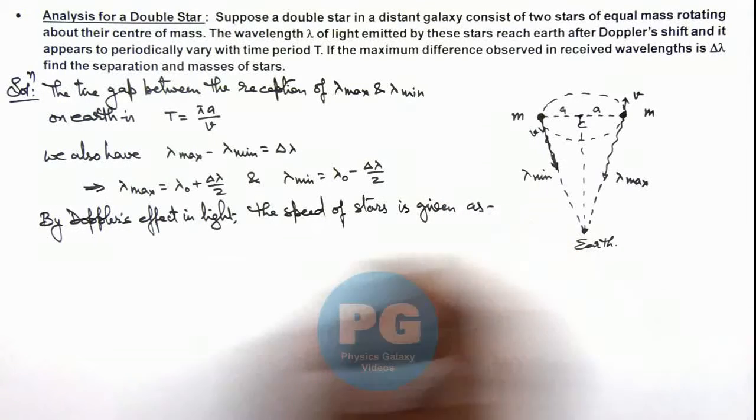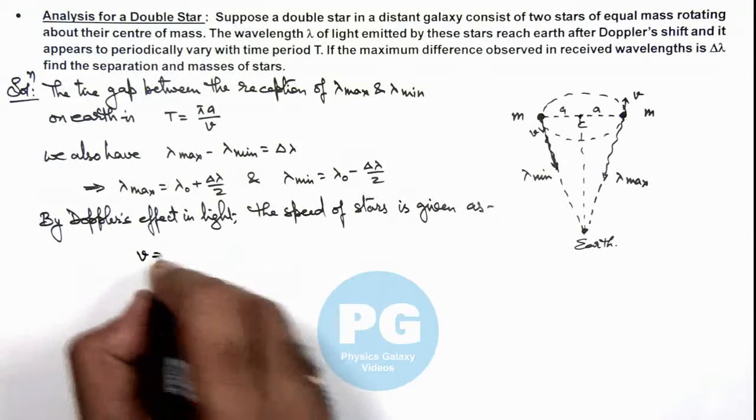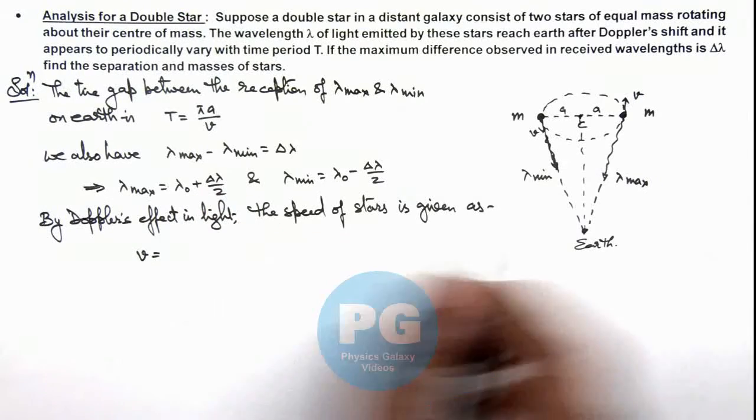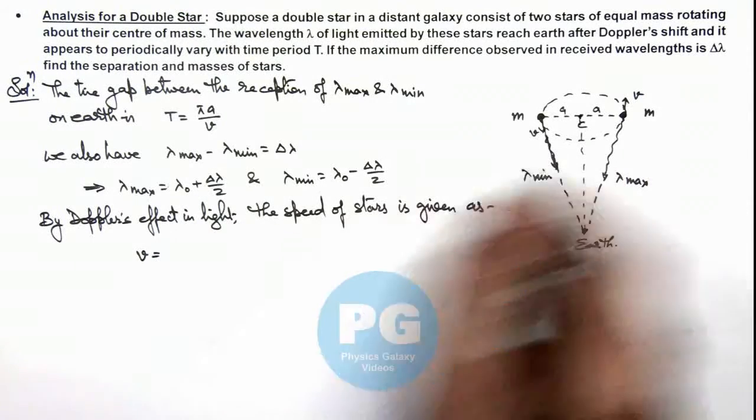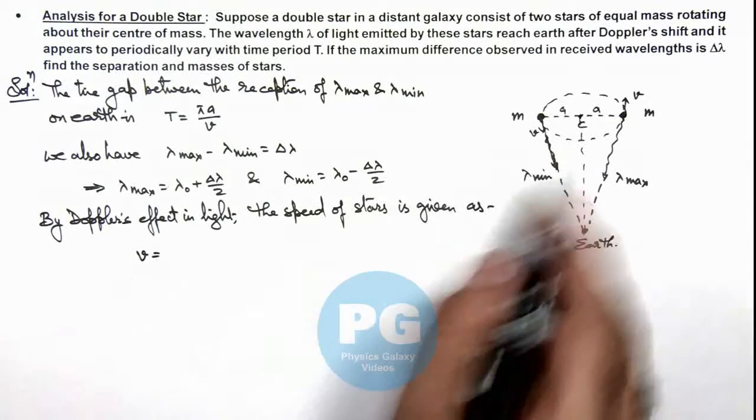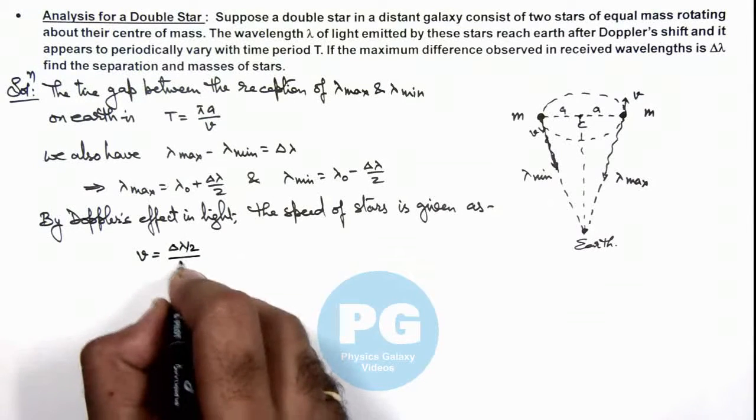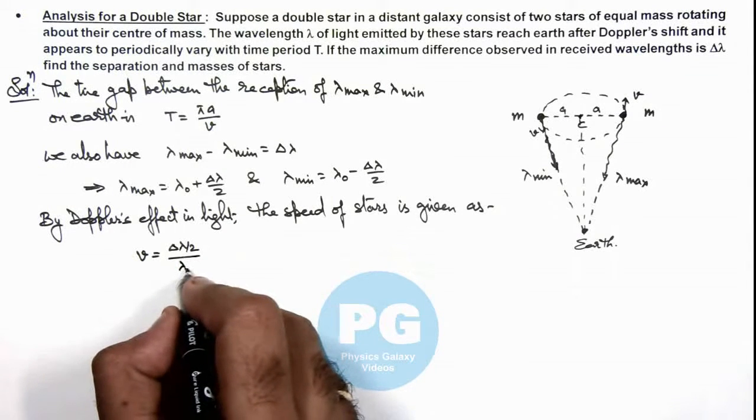We can directly write down the speed of stars by using the relation which is the shift in wavelength is Δλ/2 at each location away from its actual wavelength. So this is Δλ/2 divided by λ₀ multiplied by c.